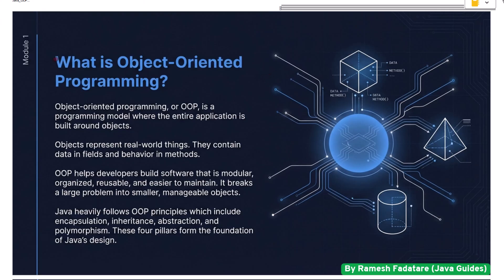What is object-oriented programming? Object-oriented programming, or OOP, is a programming model where the entire application is built around objects. Objects represent real-world things — they contain data in fields and behavior in methods. OOP helps developers build software that is modular, organized, reusable, and easier to maintain. It breaks a large problem into smaller manageable objects.